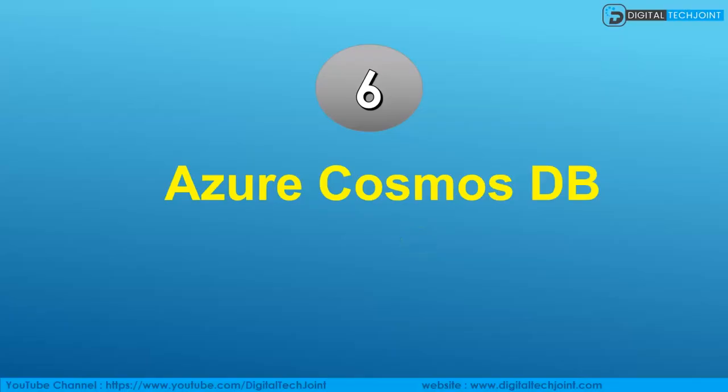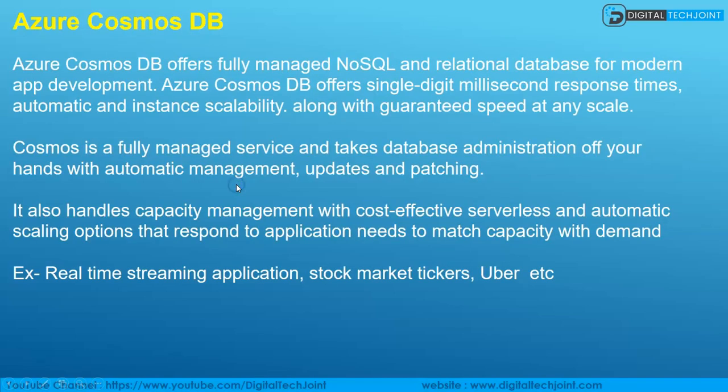The sixth service is Azure Cosmos DB. Azure Cosmos DB provides a fully managed NoSQL and relational database for modern app development. It offers single-digit millisecond response times, automatic and instant scalability, along with guaranteed speed at any scale.